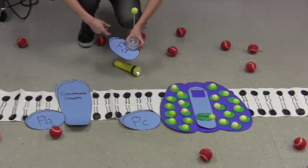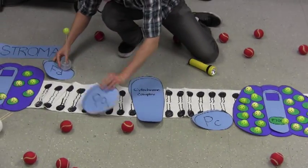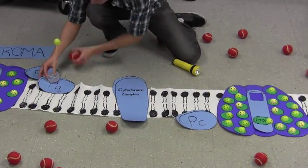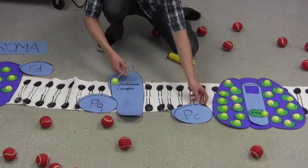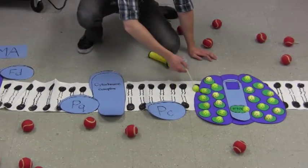And again, it ferries back to the beginning of the electron transport chain, giving it to plastic quinone. And again, this energy is used just to transport hydrogen ions across the membrane.